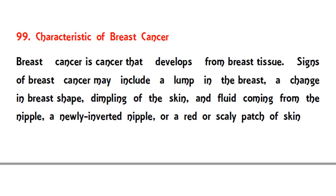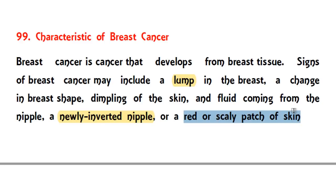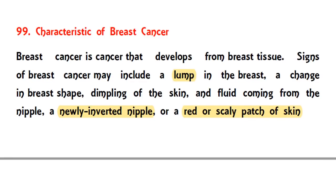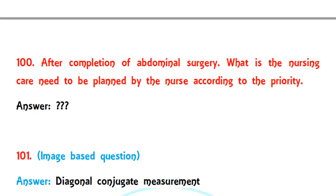Question 99 asked about the characteristics of breast cancer. Breast cancer mainly develops from breast tissue. Signs include a lump on the breast, a change in breast shape, dimpling of the skin, fluid coming from the nipple, a newly inverted nipple, or red or scaly patches over the skin in that area.